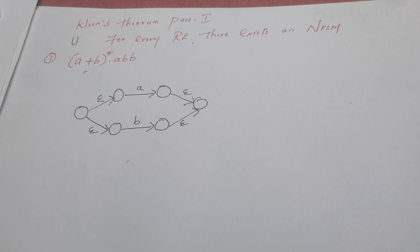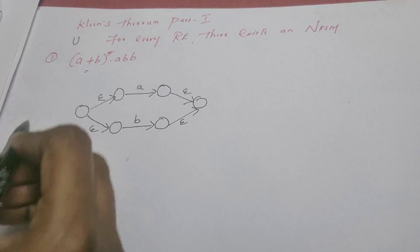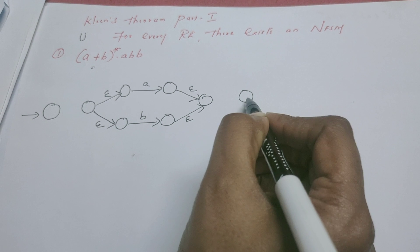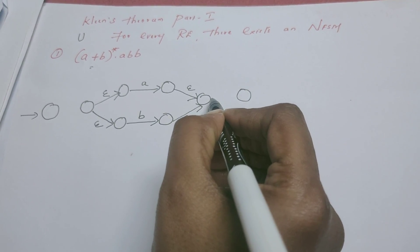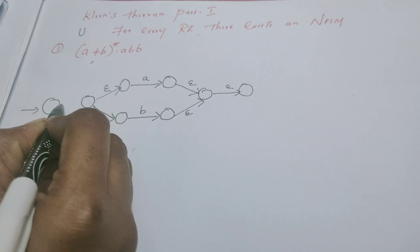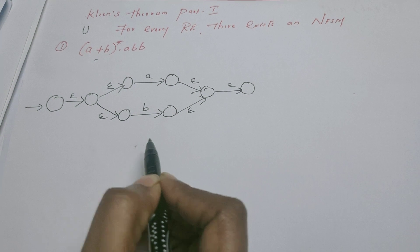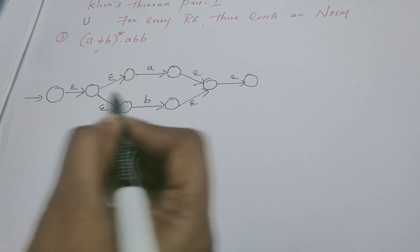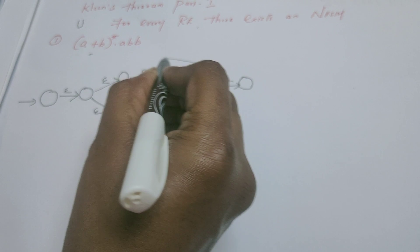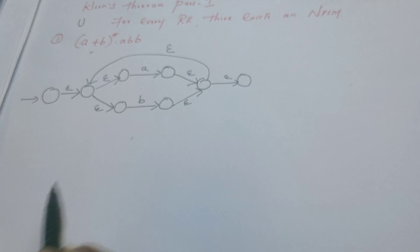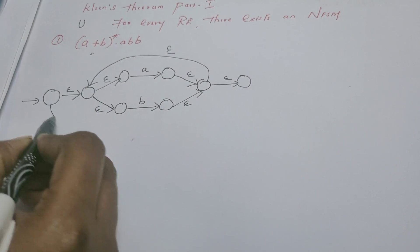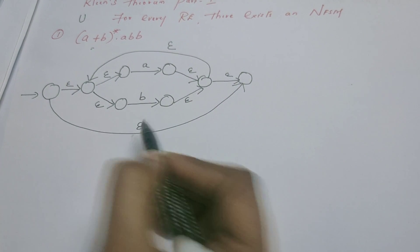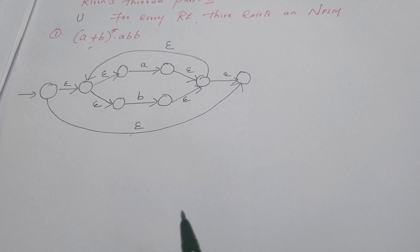Now I have to convert this machine into (a union b) whole star. I need once again a new start state and a new final state — though I am not marking it as a final state, for the same reason as before. These states are connected via epsilon transitions. From the earlier final state to the earlier start state, connect one epsilon transition. From the new start state to the new final state, connect one epsilon transition. This is as a whole (a union b)*.